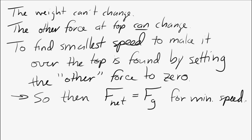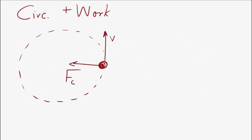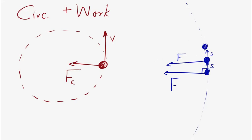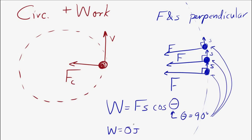Last topic: circular motion and work. If we draw an object traveling in a circle, the centripetal force points toward the center and the velocity is perpendicular to it. For any tiny displacement along the circle, the force and the displacement are always perpendicular. Since work equals force times displacement times cosine of the angle, and the angle is 90 degrees, the work is zero. So no work is done by a centripetal force in circular motion.